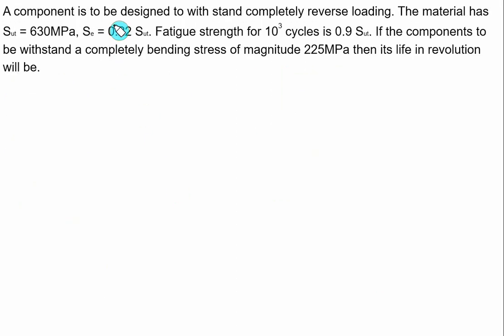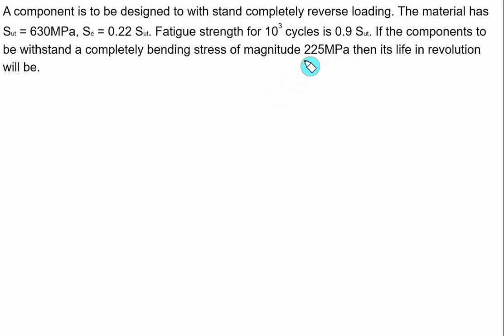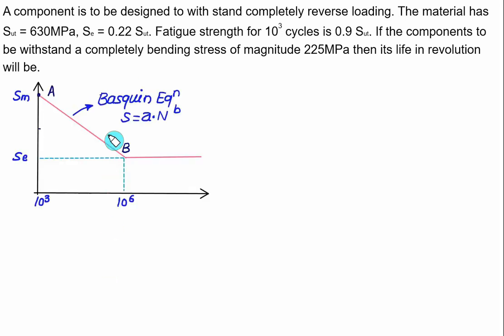Problem 2: A component is to be designed to withstand completely reverse loading. The material has SUT = 630 MPa. Endurance strength SE = 0.22 × SUT, and fatigue strength for 10³ cycles SM = 0.9 × SUT. The component is to withstand completely reverse bending stress of magnitude 225 MPa. Find its life in revolutions using the Basquin equation S = A × N^B.